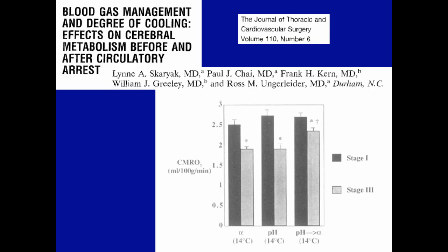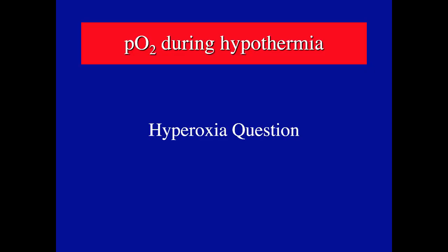Another consideration is the PO2 during hypothermia — the hyperoxia question. Hyperoxia has been defined in various ways, but here it's defined as a PVO2 greater than 300 mmHg. During deep hypothermic circulatory arrest, this venous dissolved oxygen level has been used as a hyperoxia index. The idea is that during deep hypothermia, the dissolved component of oxygen becomes more significant because it gets translated into the interstitium and becomes available to intracellular fluid.